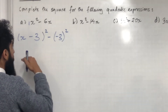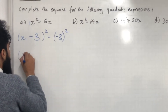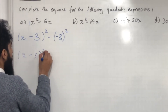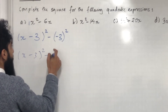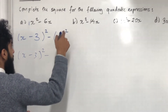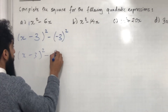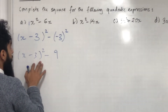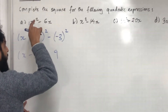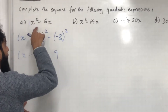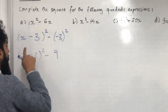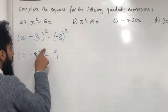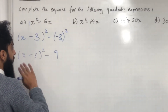Now we just clean this up. We get x minus 3, in bracket, squared, minus 3 squared which is 9. So when we complete the square on x squared minus 6x, the answer is (x − 3)² − 9.